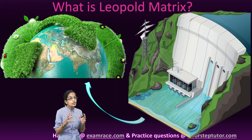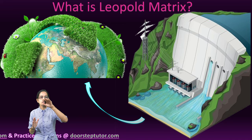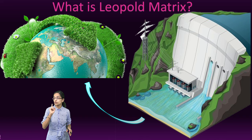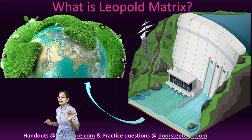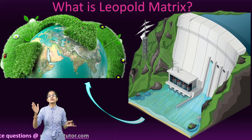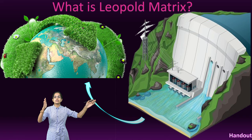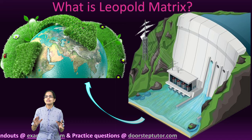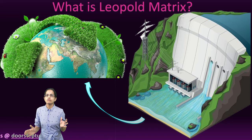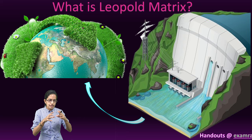When Leopold first laid down this concept, he brought in 100 factors on the horizontal axis and 88 factors on the vertical axis. So 88 into 100 means 8800 various combinations and impacts that could be studied. If we are planning to bring in a dam into a region, I can have 100 horizontal factors and 88 vertical factors creating 8800 impacts. In practice, we keep a balance of 30 to 50 parameters, which is the typical number used in a Leopold Matrix.